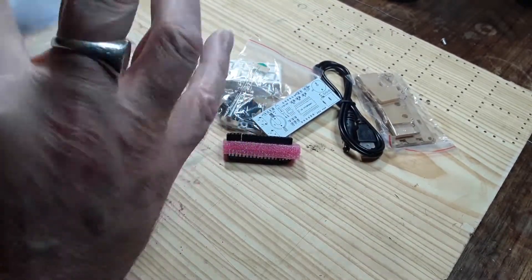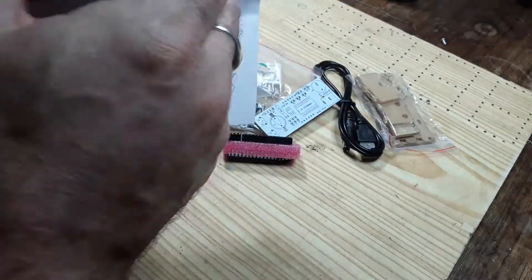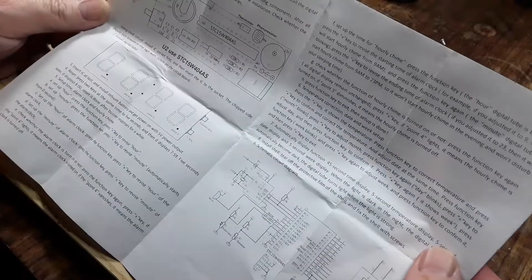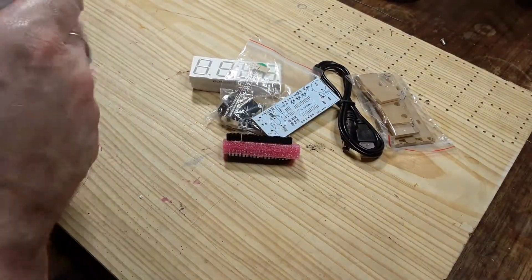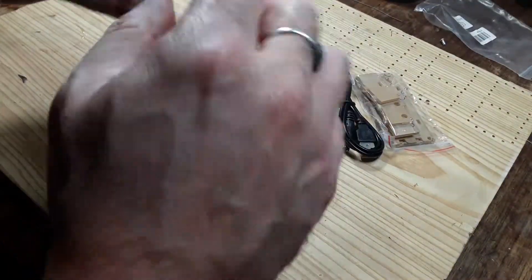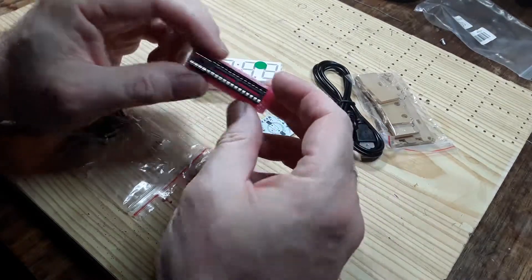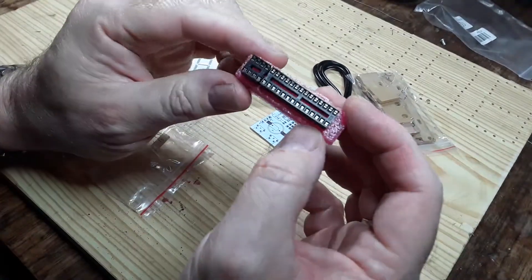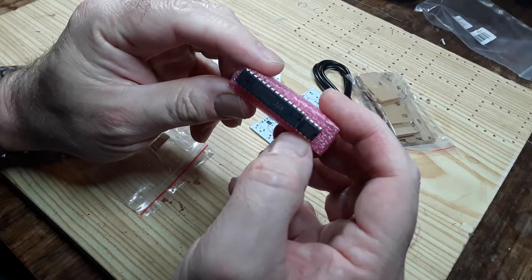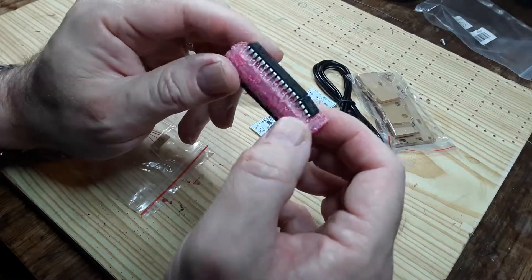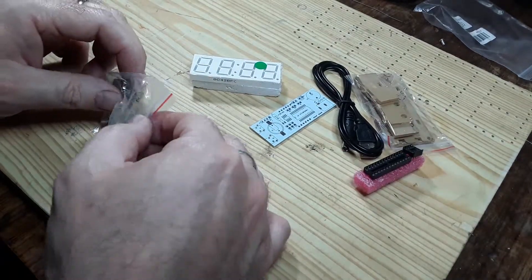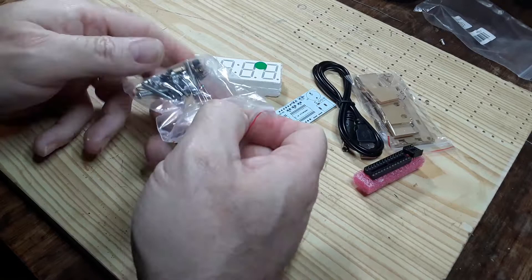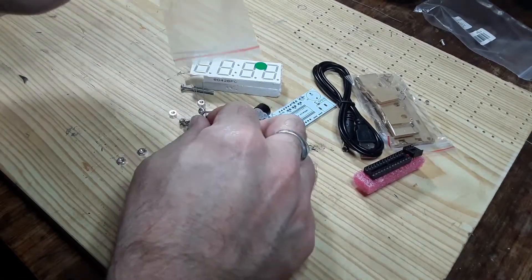We have the destructions which we won't worry about just for the moment. Let's have a look at the components. We've got some socketed chips, STC ones, very typical of these sorts of kits, and a bag of bits.